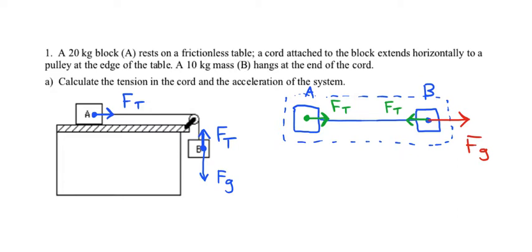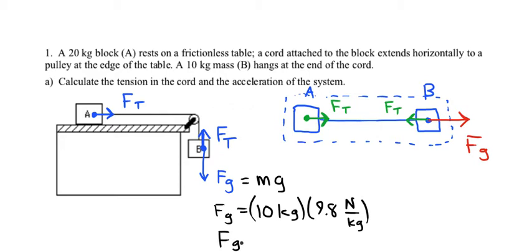The next thing I'll do is calculate how big the weight of B is. For that, we would use the formula M times G. Mass B is 10 kilograms, multiply that by G. And we see that the FG now is 98 newtons.